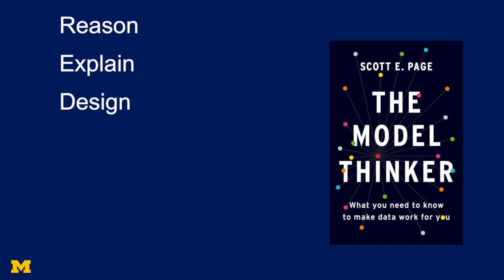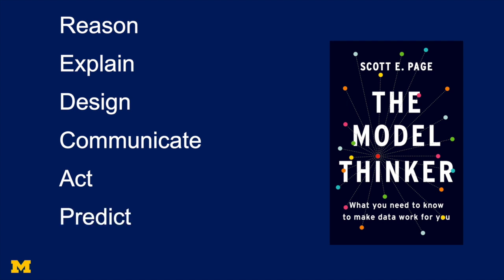Third, models help us design. Like architects construct models, policymakers construct models in order to design things. Fourth, models help us communicate. The world is an incredibly complex place, and models are simpler, so we can communicate how things work in the world much more effectively using a model. Fifth, and this is going to be most important in the case of epidemics, models help us act — they help us decide what action to take and make predictions about likely outcomes. And last, models are a place where we can explore ideas and think about alternative realities separate from the real world.